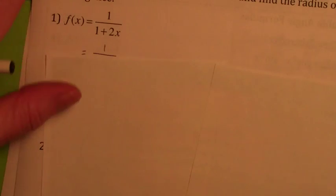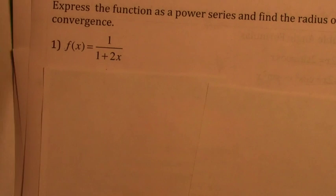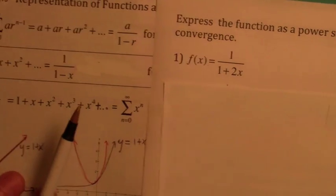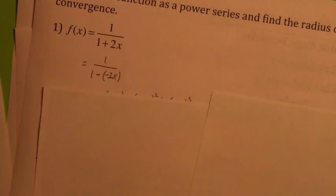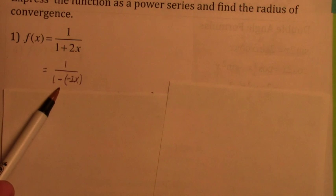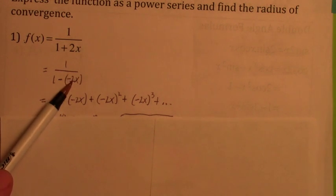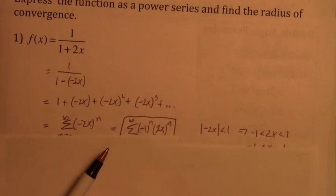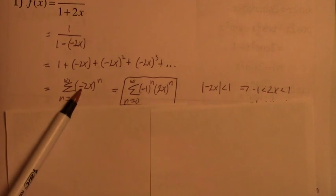Every single one of these power series can be obtained by looking at that one geometric power series. For example, 1 over 1 plus 2x — remember we have to have 1 over 1 minus x. So we're going to think of subtracting a negative 2x. We're literally plugging in negative 2x everywhere there's an x in the original power series. So we get the sum from n equals 0 of negative 2x to the n power. You could break that up — it turns out to be an alternating series.